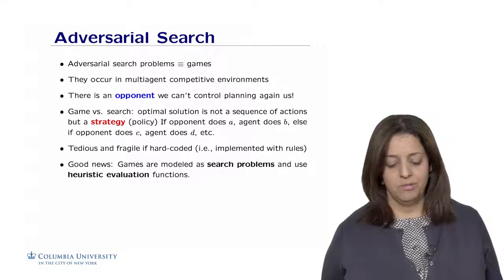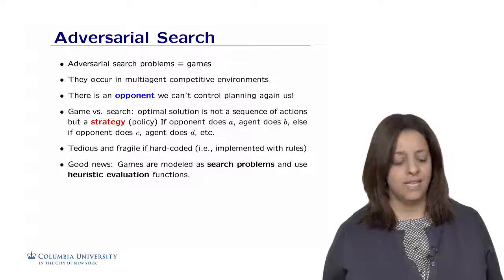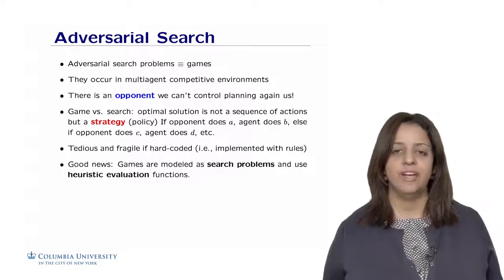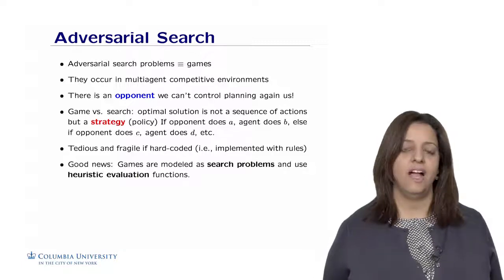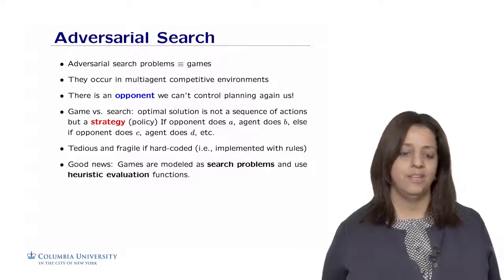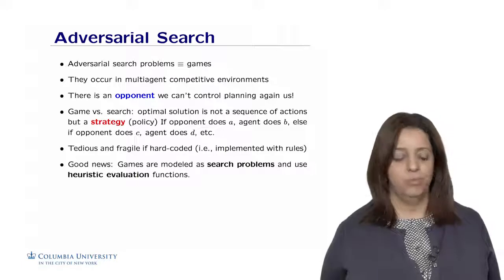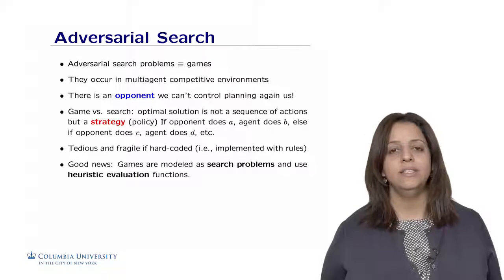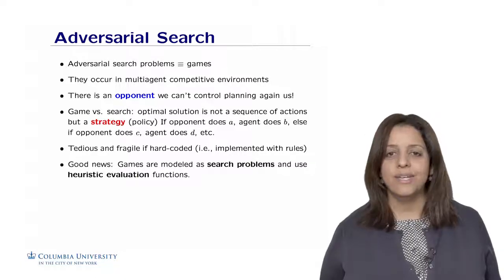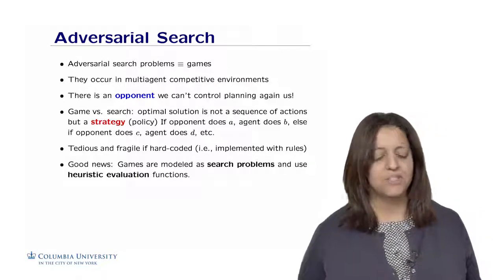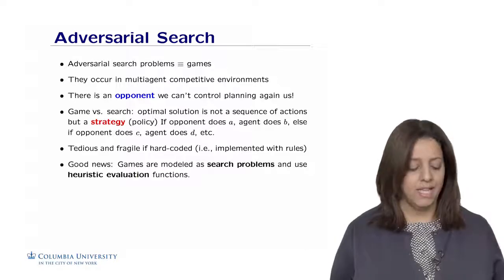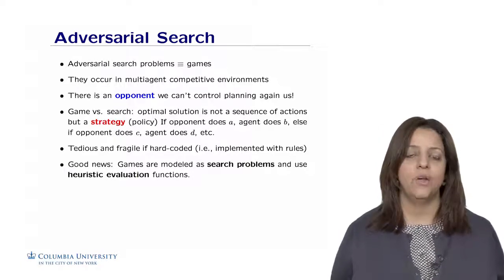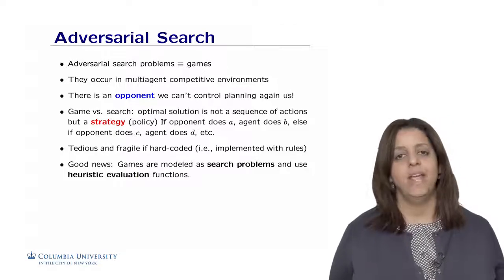In games, it's tedious and hard if hard-coded with rules. We need to devise an intelligent system that helps us play and win against opponents. The good news is we only need two ingredients you already know: search algorithms and heuristic evaluation functions. These are the main ingredients to model and solve games in AI.